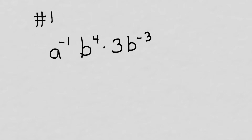Look at this. We've got a to the first times b to the fourth times three b to the negative third. I'm going to go ahead and put a line for a numerator and a denominator. A to the negative one — I hope you all realize that is going to be just an a. There is no number that goes along with the three; I'm not multiplying it times another coefficient, so I can just bring down the three.